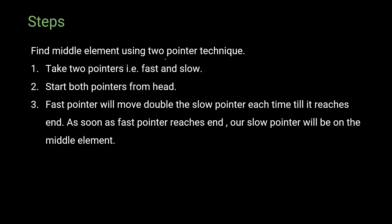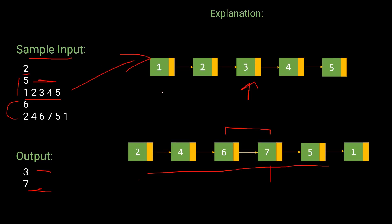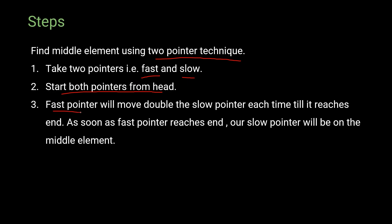To solve this problem we are going to use the two-pointer technique. We take two pointers — fast and slow — and start both from the head of the linked list. The fast pointer moves at double the speed of the slow pointer. As soon as the fast pointer reaches the end, the slow pointer will be on the middle element.